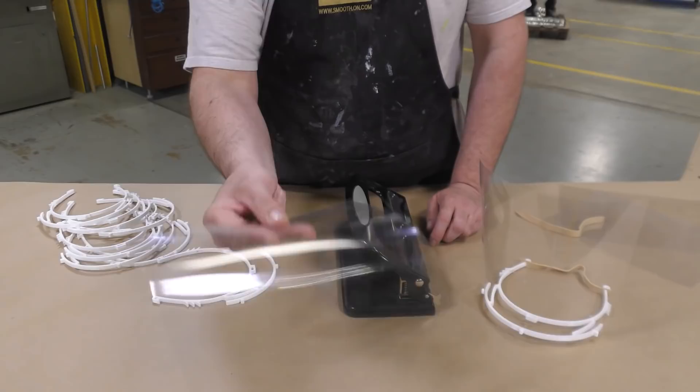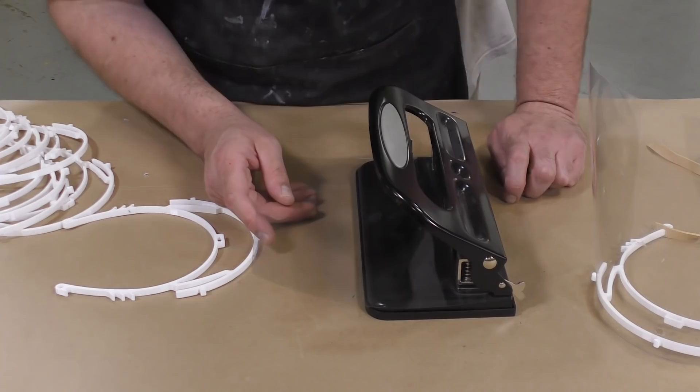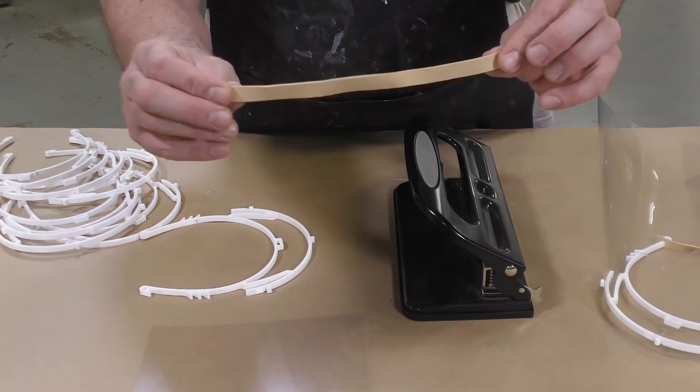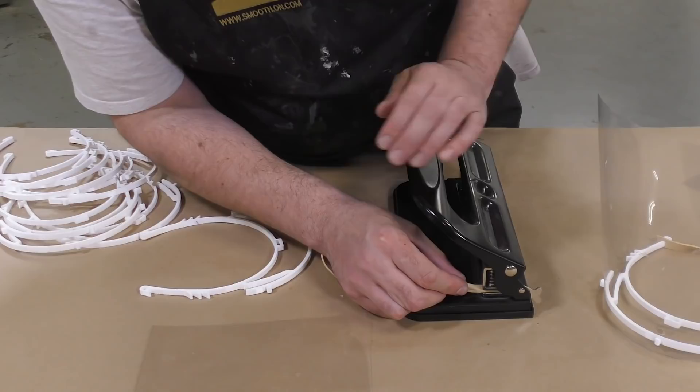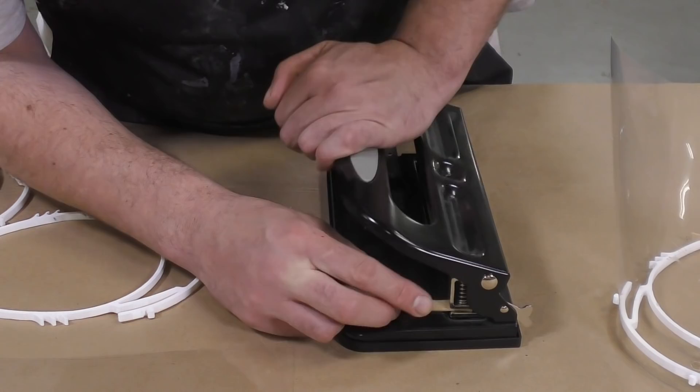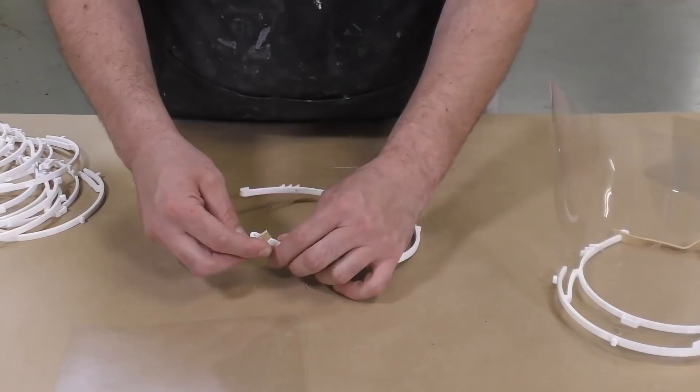Now to the visor itself. This is a clear sheet of plastic that you can get in many sizes. This one is from an overhead projector. I'm simply going to punch three holes with our hole puncher because the frame itself is designed to fit that layout. Then we're going to take a piece of rubber band and punch some holes at the ends here too.